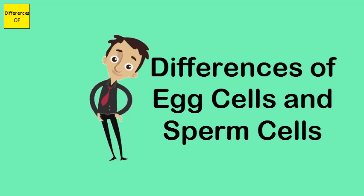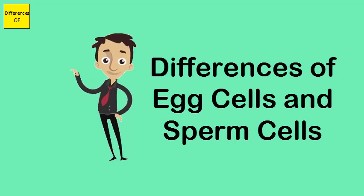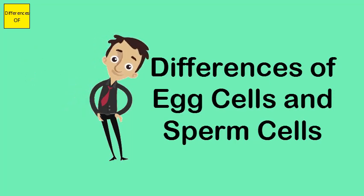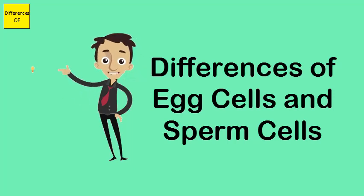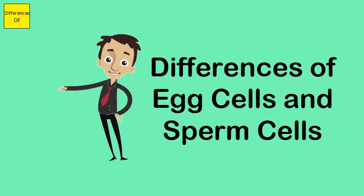Egg cells are the roundest cells, whereas sperm cells are the straightest type of cells. Egg cells are evident to the naked eye, while sperm cells possess barely any content.